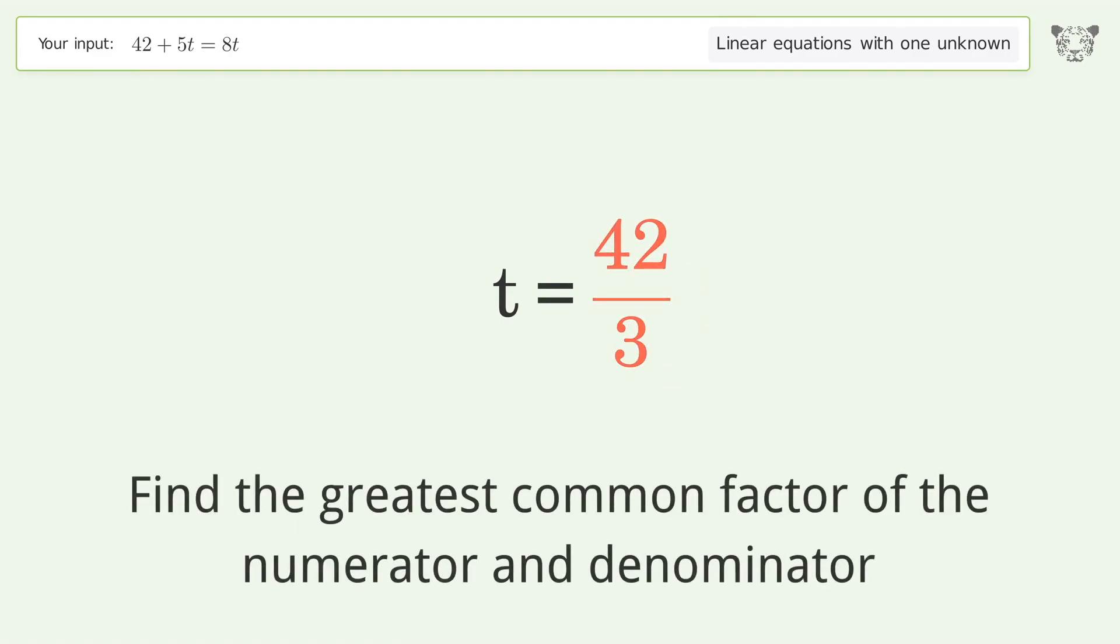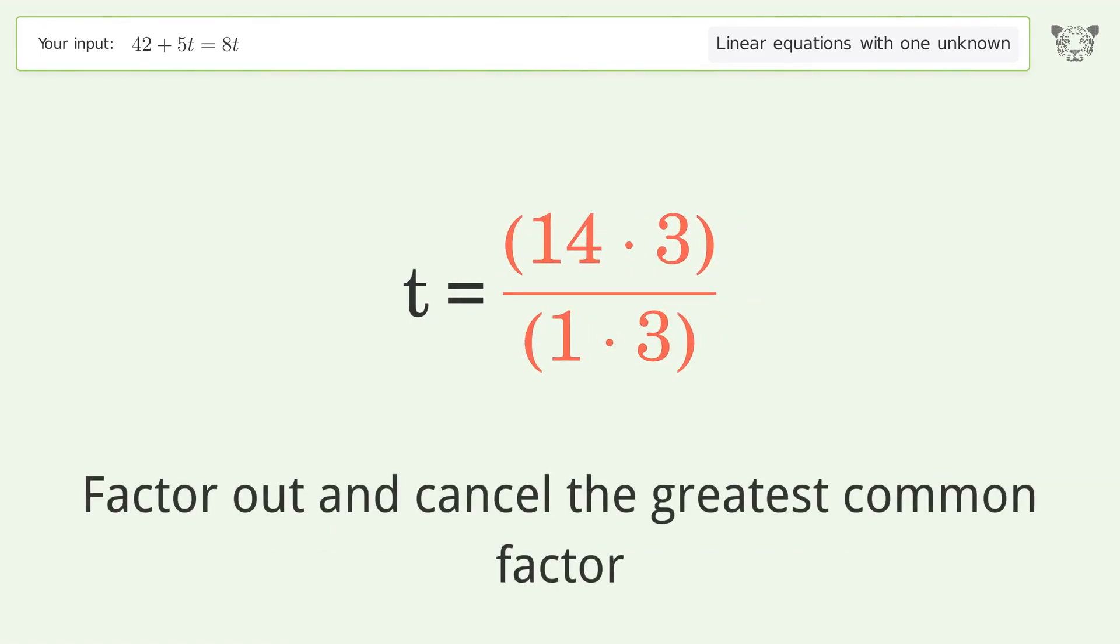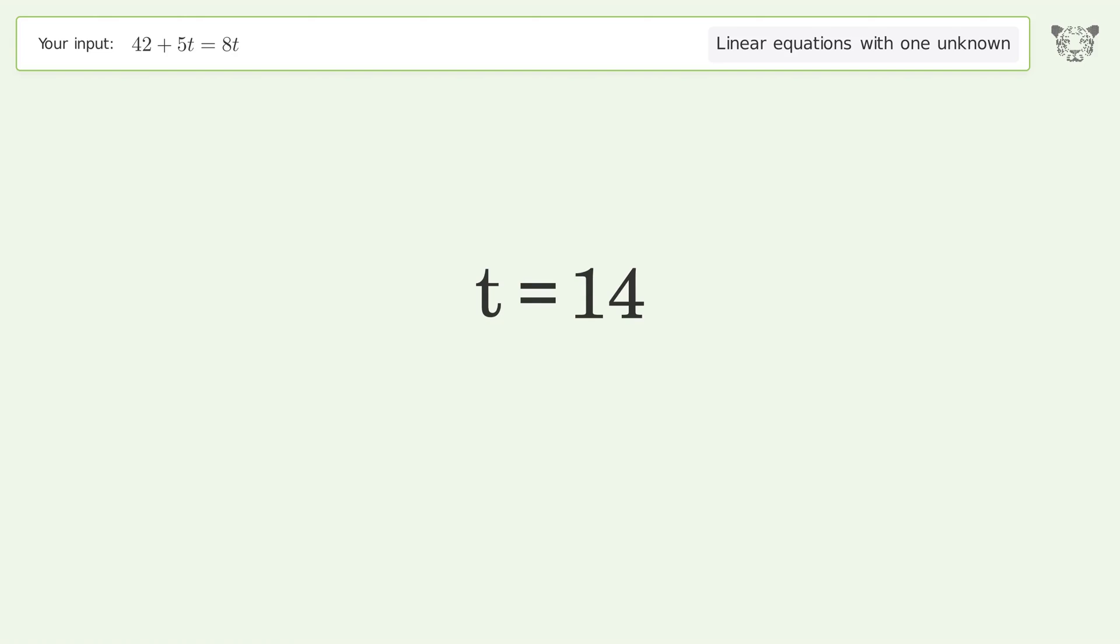Find the greatest common factor of the numerator and denominator. Factor out and cancel the greatest common factor. And so the final result is t equals 14.